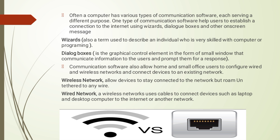A dialog box is basically a graphical control element in the form of a small window that communicates information from one user to another and shows an instant response to the user. Communication software also allows home and small offices to configure wired and wireless networks and connect devices to an existing network. A wireless network allows devices to stay connected without using any cable or wire, while a wired network connects devices through a cable.